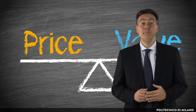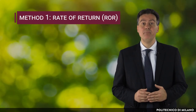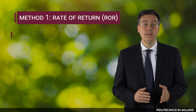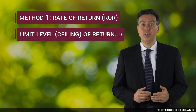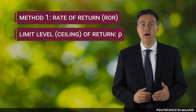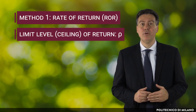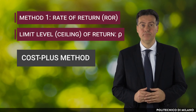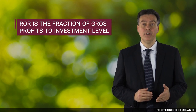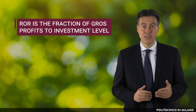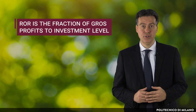The first method to regulate prices is based on the rate of return regulation. This mechanism sets a ceiling of returns — raw — that the company can enjoy above its operating cost. For this reason, this mechanism is also called the cost plus method. In accounting terms, the rate of return is the fraction of gross profit to investment level, that is the stock of capital net of depreciation.